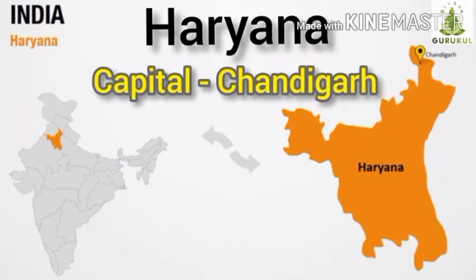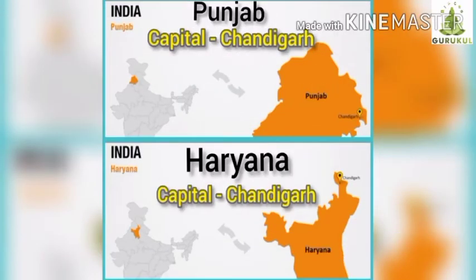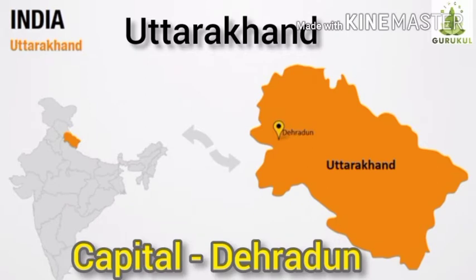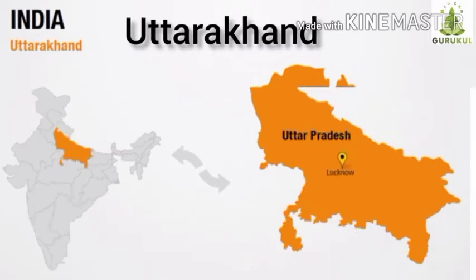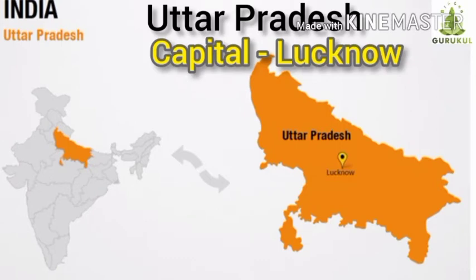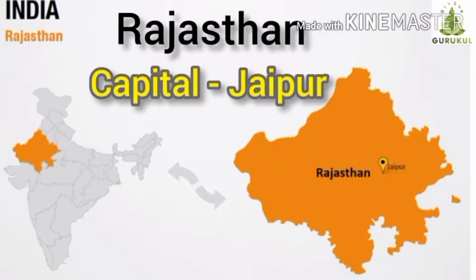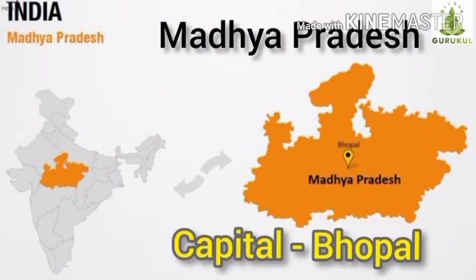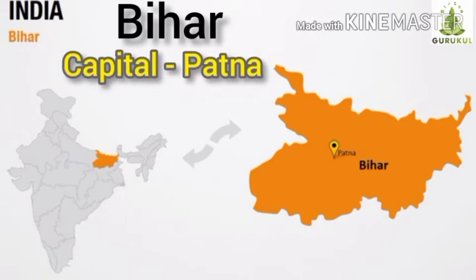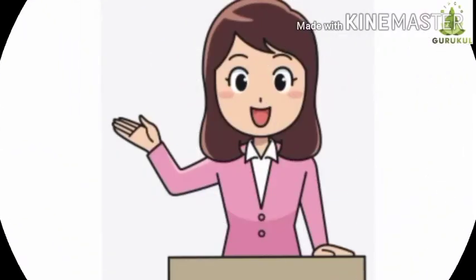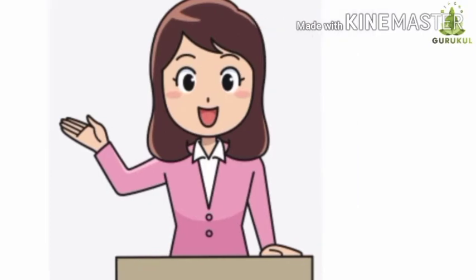Haryana — capital is Chandigarh, meaning both Punjab and Haryana share the same capital. Next, Uttarakhand — capital is Dehradun. Uttar Pradesh — capital is Lucknow. Next state, Rajasthan — capital is Jaipur. Children, Rajasthan is the largest state in India. Then Madhya Pradesh — capital is Bhopal. Bihar — capital is Patna.